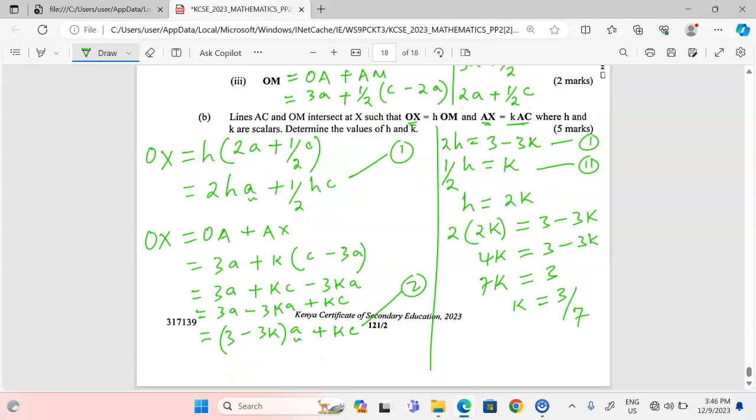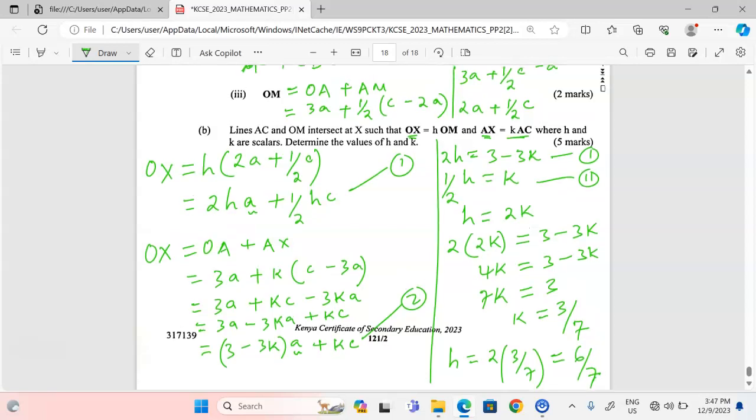So that we may agree together that the value of h will be 2 multiplied by k, which is 3/7, so this is going to be 6/7.